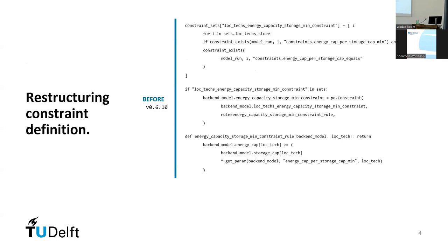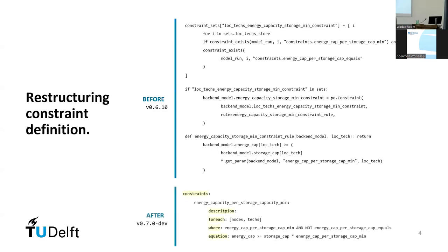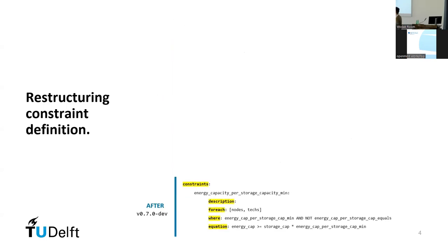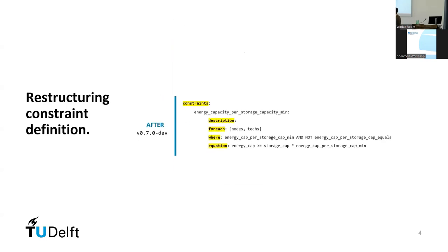I just want to show you how the model looked like before the restructuring — and some people are laughing. But now, after the restructuring of the constraint, it looks like this. It's super clean, super straightforward. Boolean operators really make the equations stand out. That's what we mean by having user-friendly code.